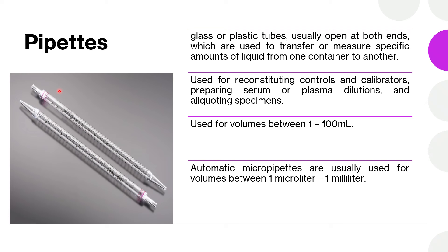So this is a narrow tube made of either glass or plastic, and it's usually open at both ends. Pipettes are used for reconstituting controls and calibrators, preparing serum or plasma dilutions, and also for aliquoting specimens.